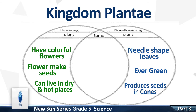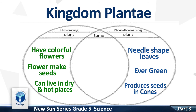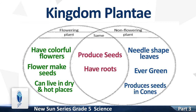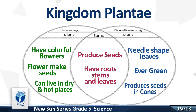Let's write in the center of the circle the things that are the same in both flowering and non-flowering plants. Both produce seeds. They have roots, stems and leaves.